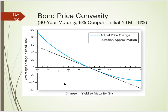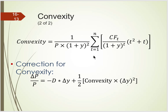To be accurate, we need to consider convexity. Here's the formula for convexity: it's 1 divided by the price times (1 plus the yield) squared, multiplied by the summation — for each period, take the cash flow at time T divided by (1 plus y) to the T power, multiplied by (t squared plus t). You do that for every period, add them all together, and multiply by that product — that's convexity. To find the price change, take negative duration times the change in yield, plus half of the convexity times the change in yield squared.